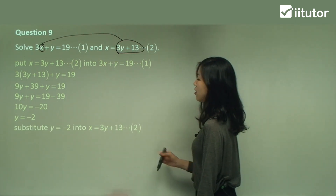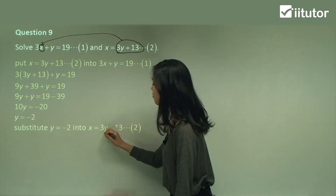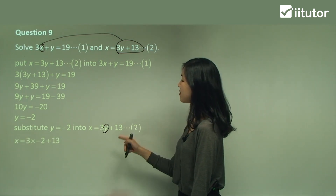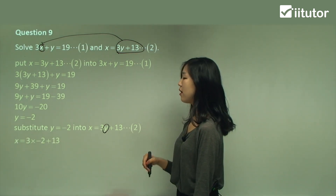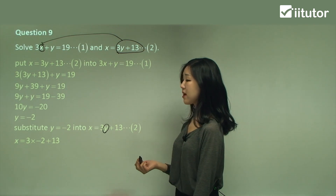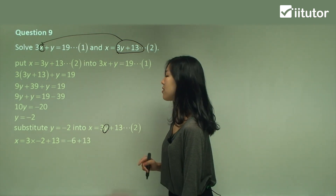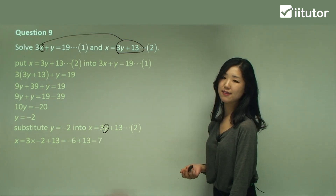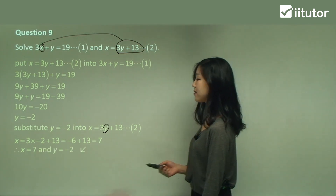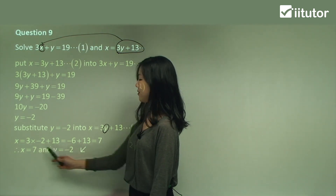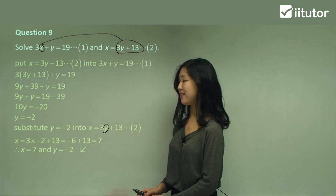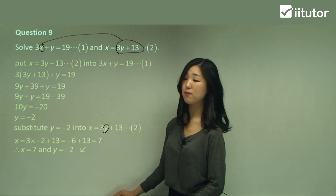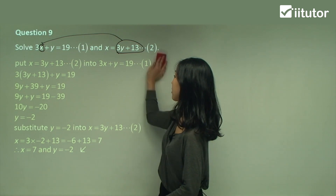Sub it into equation 2 — put negative 2 into the y position. So: 3 times negative 2 plus 13. 3 times negative 2 is negative 6, plus 13 is 7. Therefore x equals 7. So y equals negative 2 and x equals 7 — that is our final answer. Always make a conclusion; that's the best way for teachers to mark.